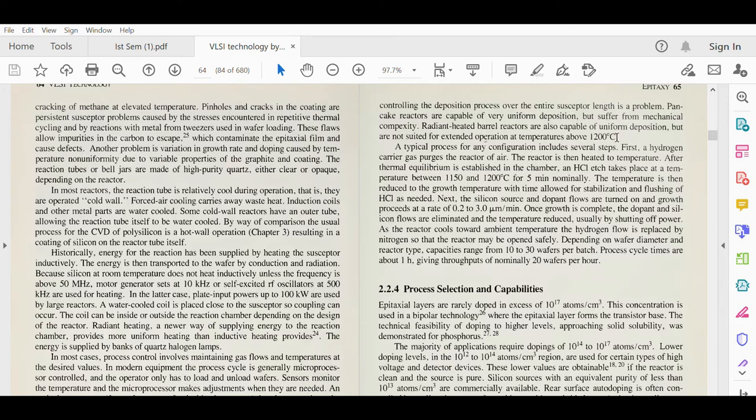A typical process for any configuration includes several steps. First, a hydrogen carrier gas purges the reactor of air. The reactor is then heated to temperature. After thermal equilibrium is established, HCl etching takes place at a temperature between 1150 to 1280 degrees centigrade. Normally the temperature is then reduced to the growth temperature with time allowed for stabilization. Fusing of HCl is needed. Next, the silicon source and dopant flows are turned on.